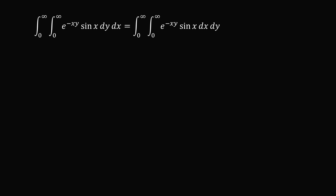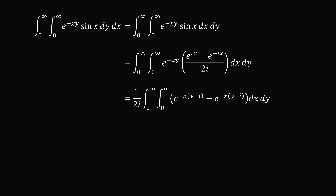Now, how do we evaluate this? We'll write sine x in terms of Euler's formula. So sine x can be substituted as e to the power of ix minus e to the power of negative ix, all over 2i. From here we can multiply the exponentials. We have e to the power of negative x multiplied by y minus i, minus e to the power of negative x multiplied by y plus i. This is dxdy, with limits from 0 to infinity, 0 to infinity, and we pull out the 1 over 2i.